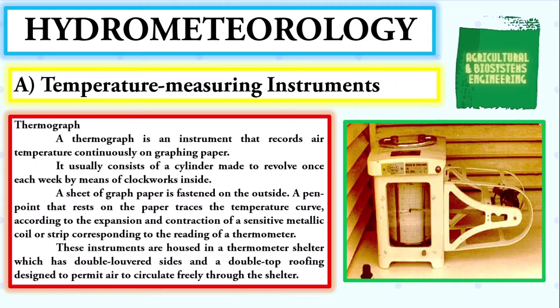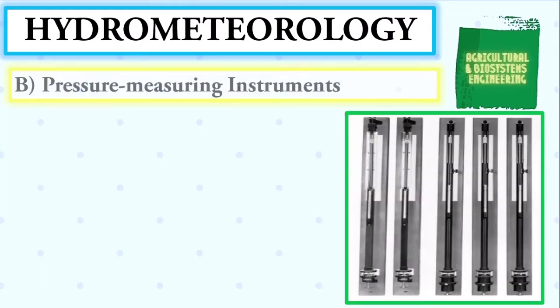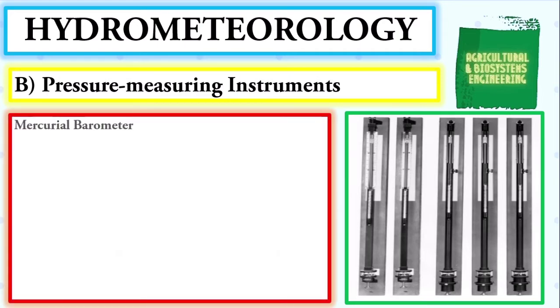These instruments are housed in a thermometer shelter, which has double louvered sides and a double top roofing designed to permit air to circulate freely through the shelter. Next, let us discuss the instruments used in measuring atmospheric pressure.